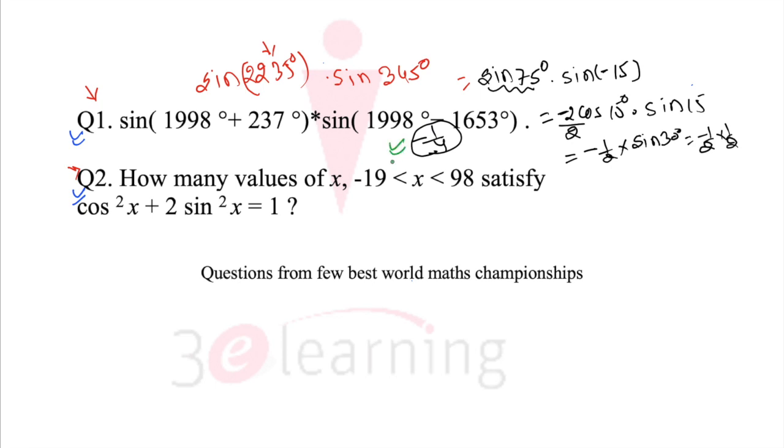So I hope this one is clear. Answer of this question is minus 1 by 4. It's time for second question. Whenever we have sin²x plus cos²x is equal to 1, we call it identity.